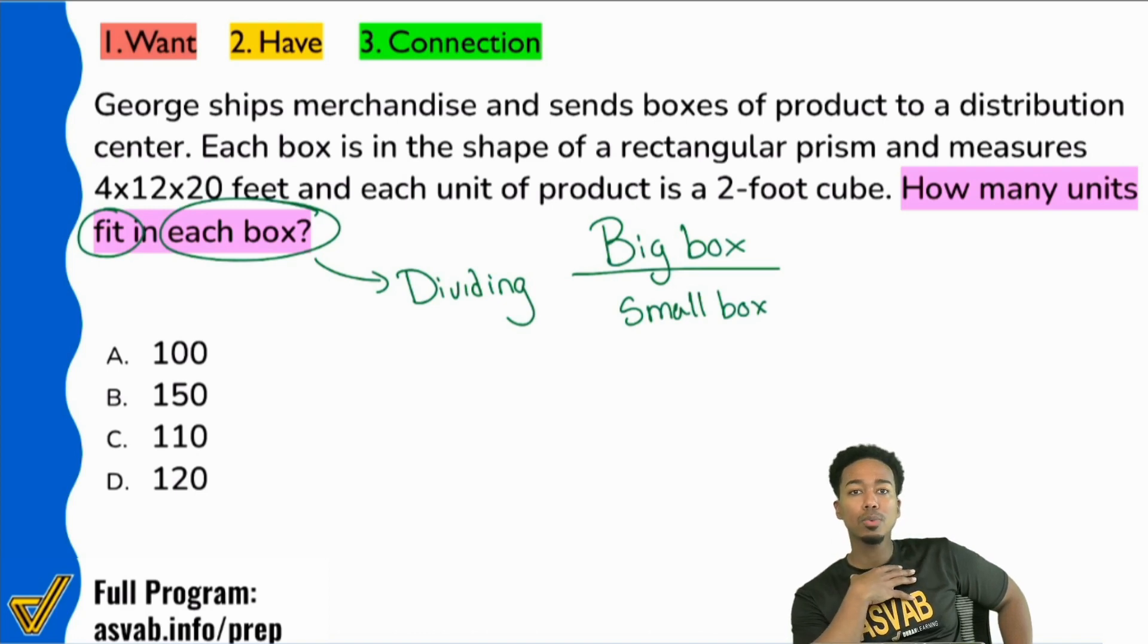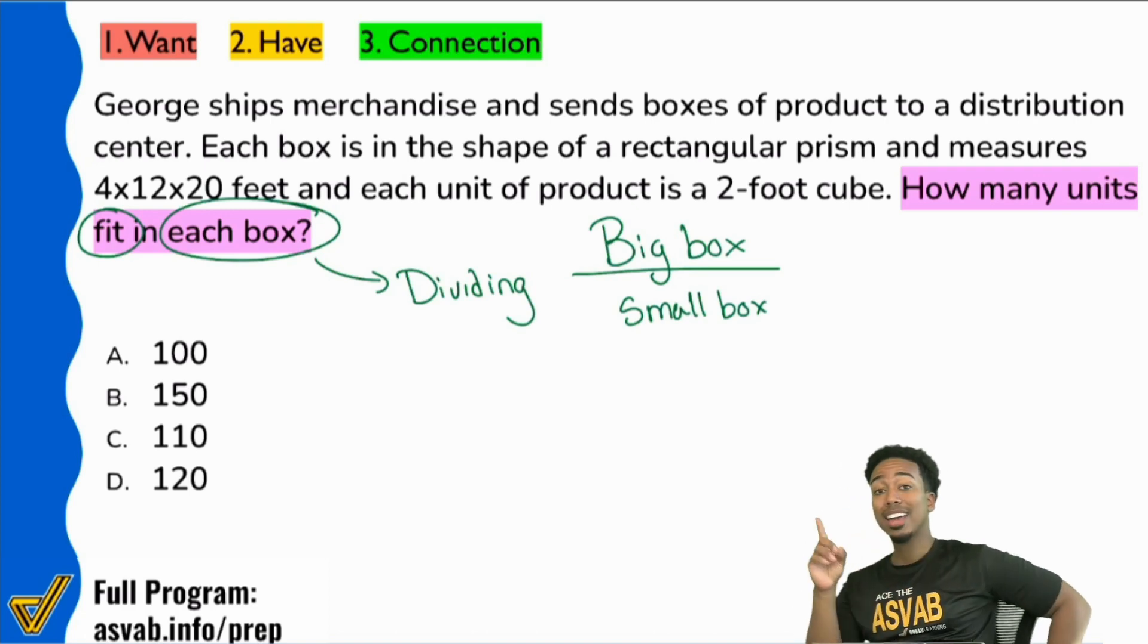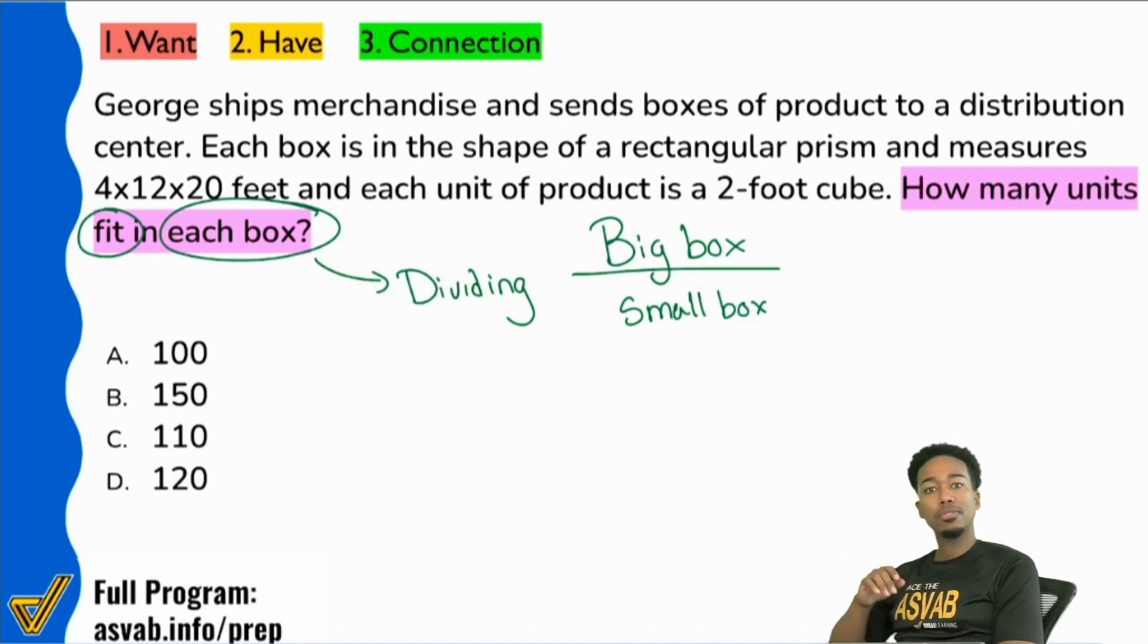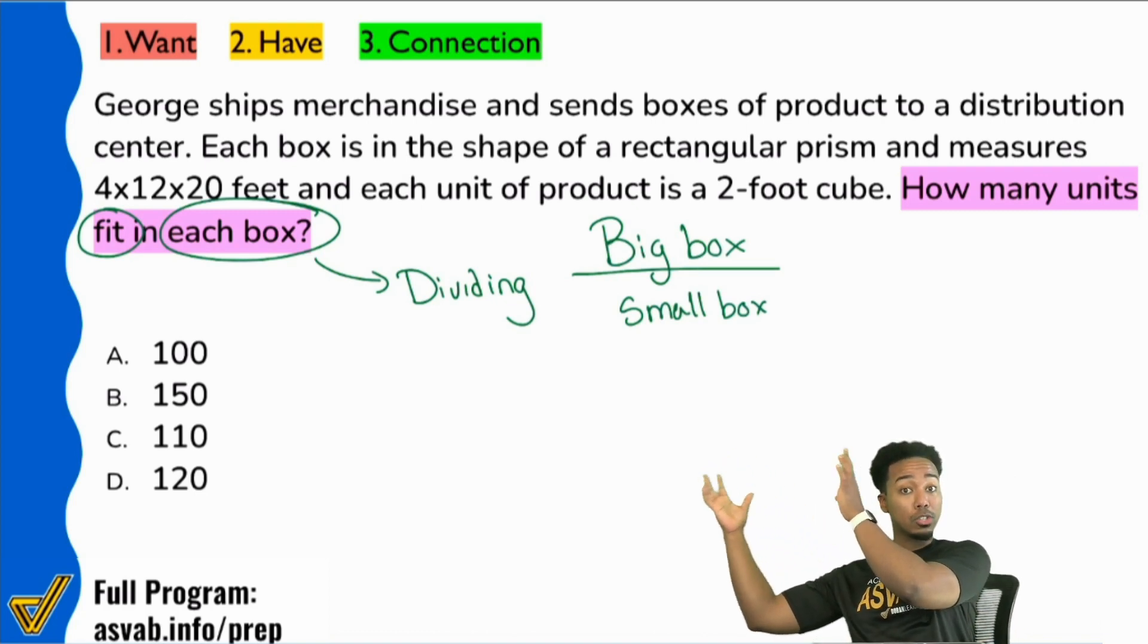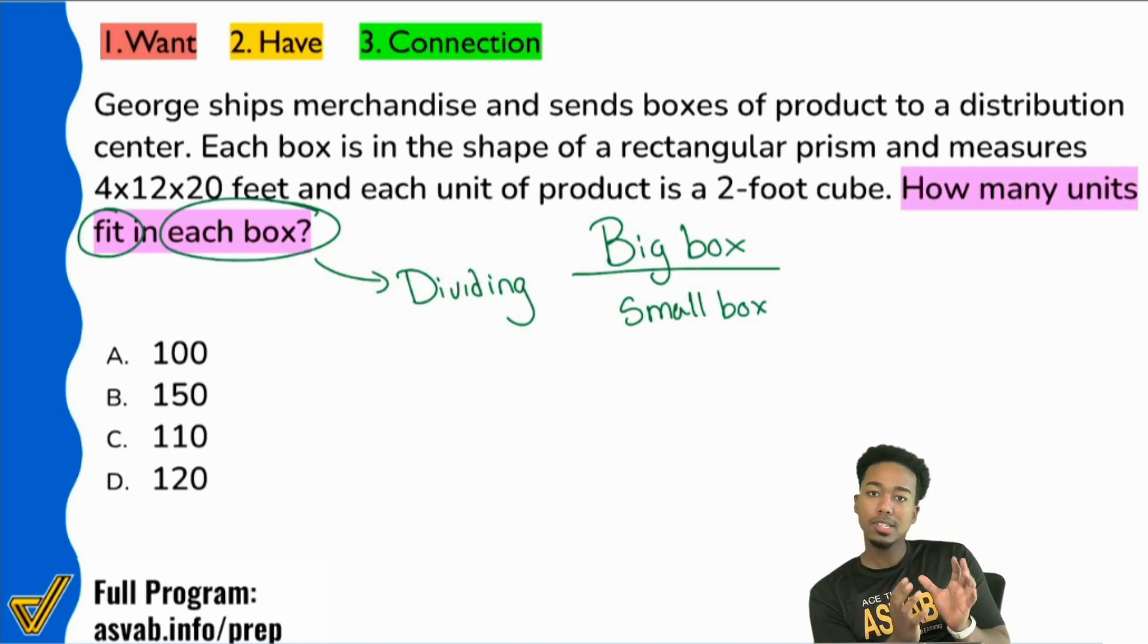The smaller one is a two-foot cube. So if you didn't know, a cube is like a square. A square has all the same sides. A cube has all the same dimensions. Length, width, and height are all going to be two. So notice how in theory, guys, we can find the volume of the big box. We can find the volume of the small cube. And when we divide the volume, the total space of that big box by the space of these products, we're going to see how many products we can fit. Does that make any sense at all there?